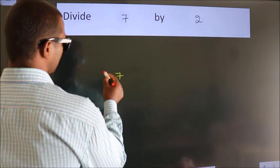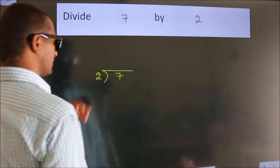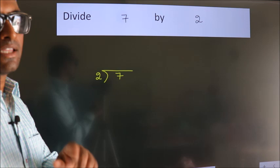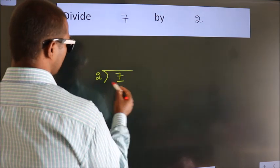7 here, 2 here. This is your step 1. Next, here we have 7, here 2.